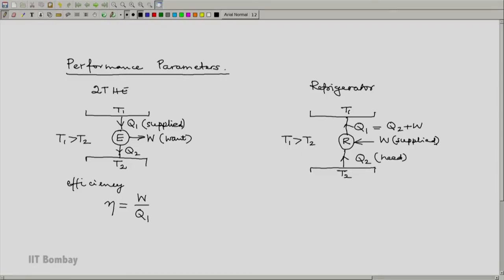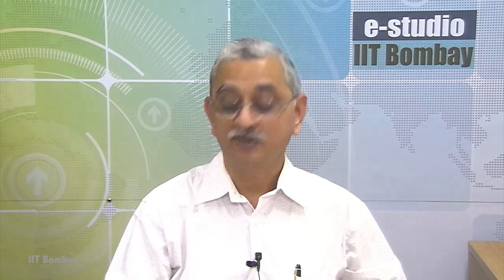This W represents the electricity consumption, the power consumed to maintain this flow Q2. So this is what we want; this is what needs to be supplied for it to work.